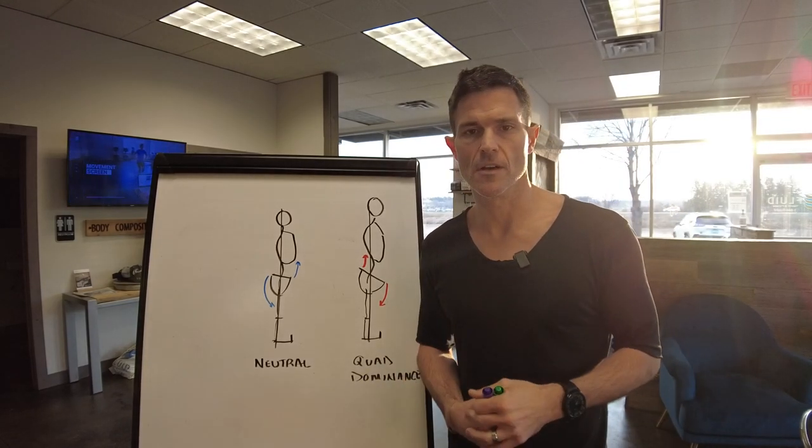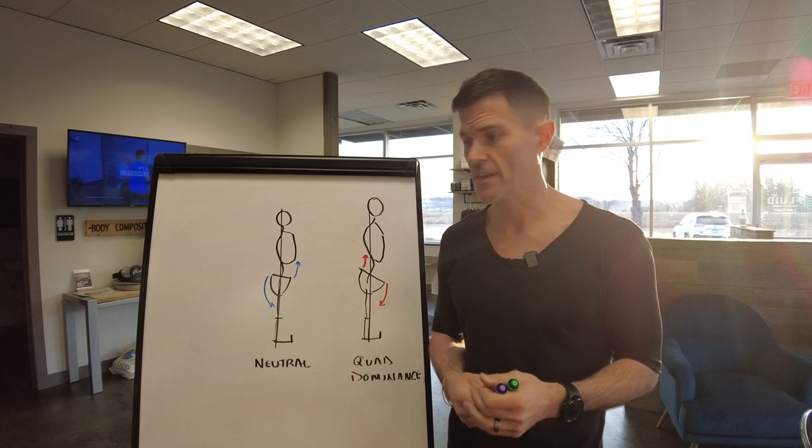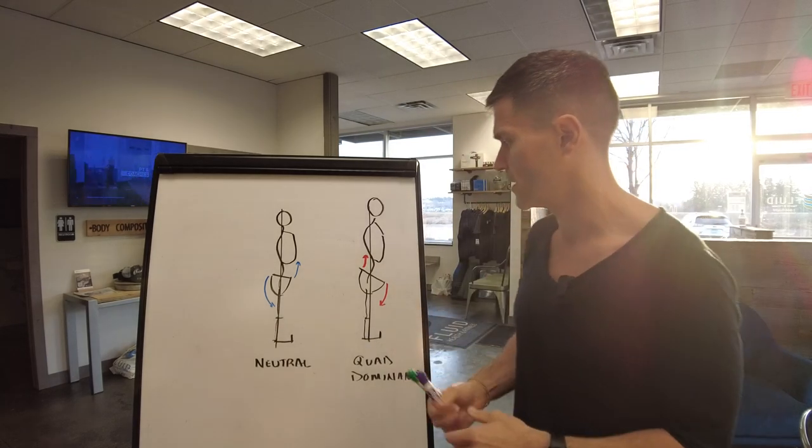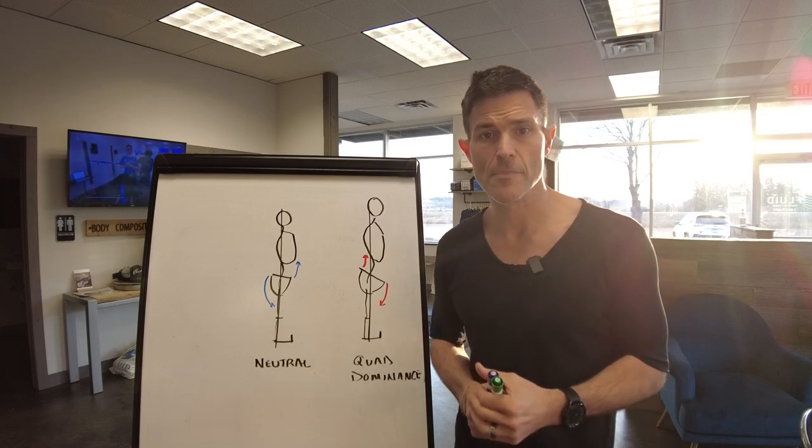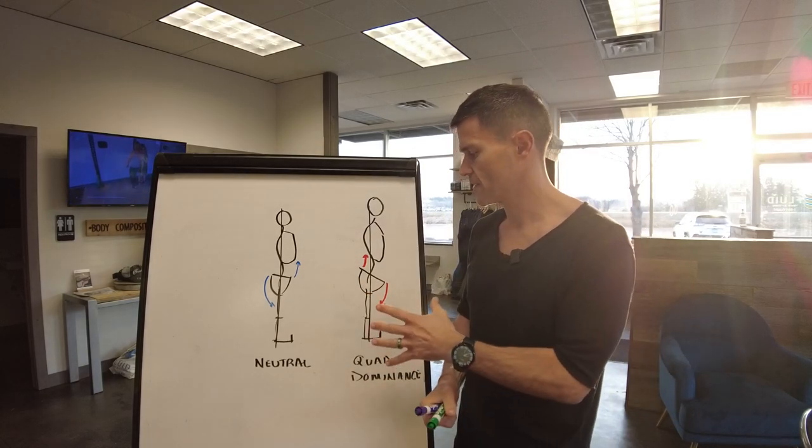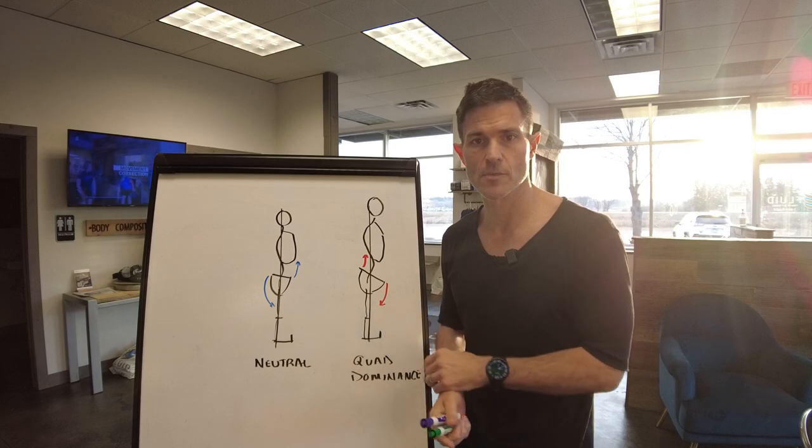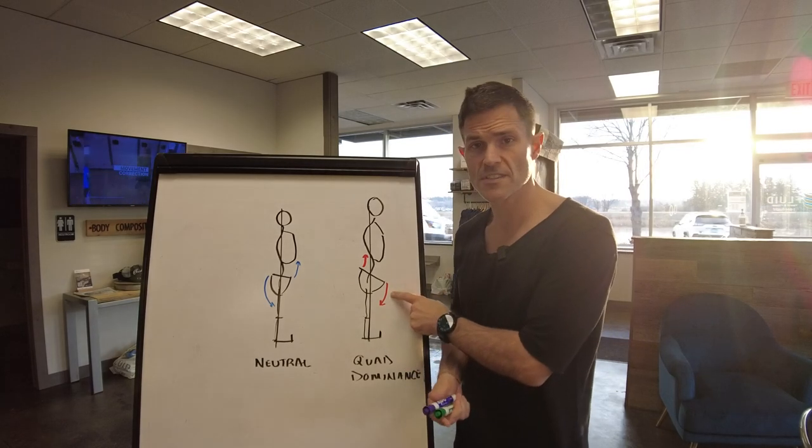Movement impairments that we normally demonstrate as human beings. It's very common, especially for athletes. It has to do with the imbalance of force around the hips, specifically between the big polyarticular muscles, namely the quadriceps and the glutes and hamstrings.